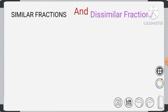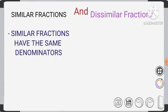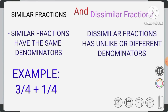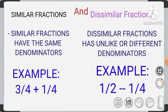Let us remind ourselves of what is the difference between similar fractions and dissimilar fractions. Similar fractions are fractions that have the same denominator. For example, 3/4 plus 1/4 — that is an example of similar fractions. Dissimilar fractions are the complete opposite: they do not have the same denominators. For example, 1/2 minus 1/4 is an example of dissimilar fractions.